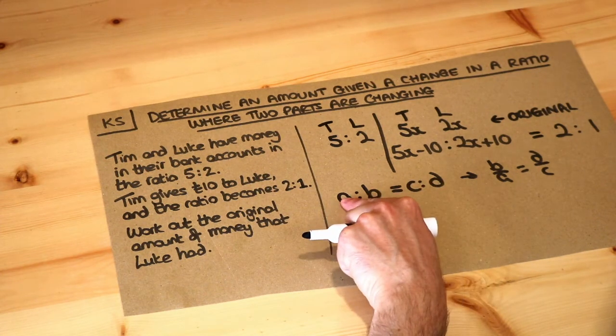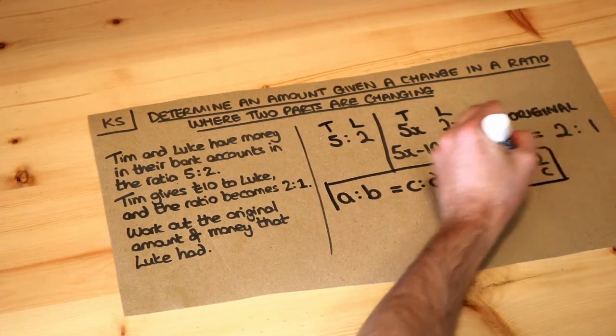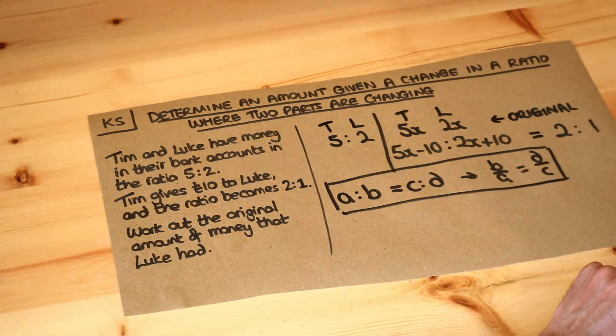Which means I can do that divided by that is equal to that divided by that. So don't worry too much about that. But the point is we can turn a ratio into an equation like this.